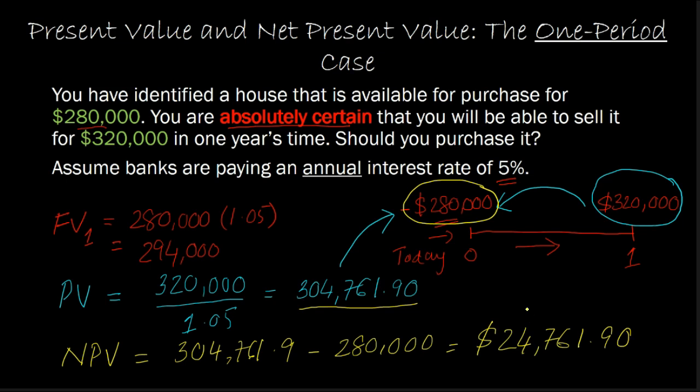This is still a good investment because it's literally like somebody coming to you and saying, would you pay $280,000 to me today? And in return I'll give you $304,761.90 to you today. It's literally as if somebody is saying, hey buddy, do you want $24,761.90 today? The answer to that is, yeah, of course. And so this is the idea behind calculating present value and net present value.